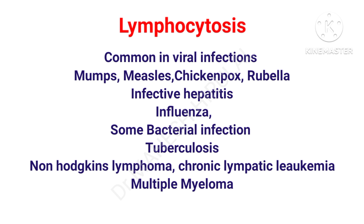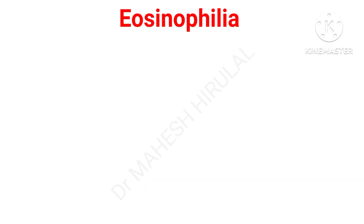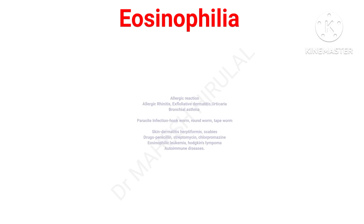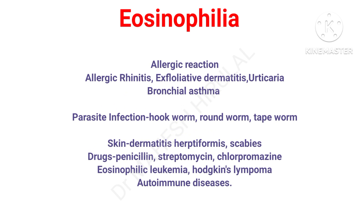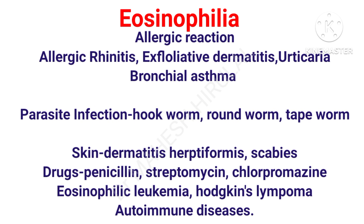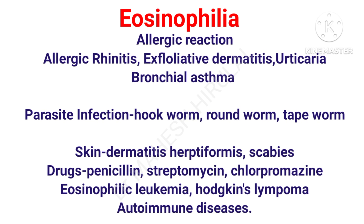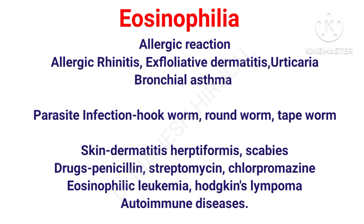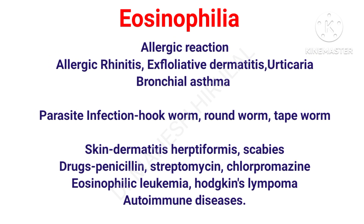In non-Hodgkin's lymphoma, chronic lymphatic leukemia, and multiple myeloma, there may be an increase in lymphocytes. Increase in eosinophils is called eosinophilia, which is most commonly observed in allergic reactions like allergic rhinitis, exfoliative dermatitis, urticaria, and bronchial asthma. In parasitic infections like intestinal worms, we can also observe eosinophilia.